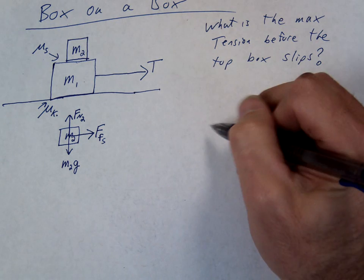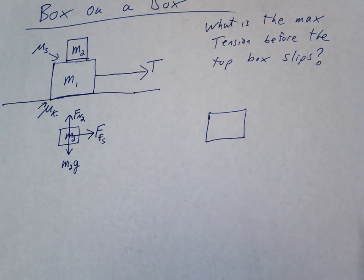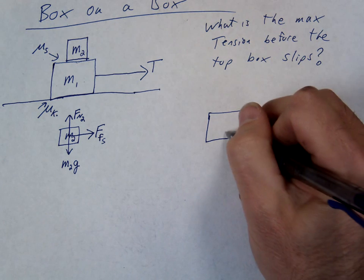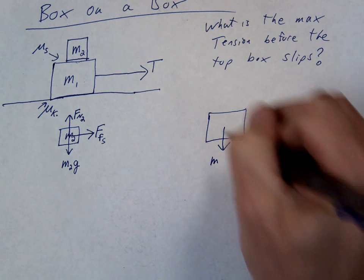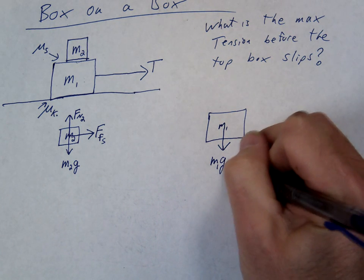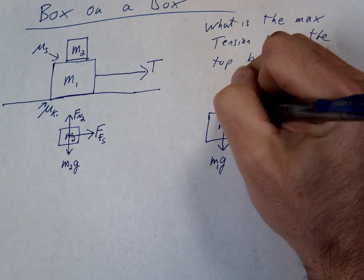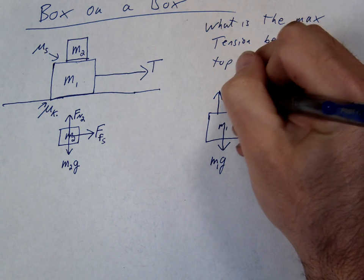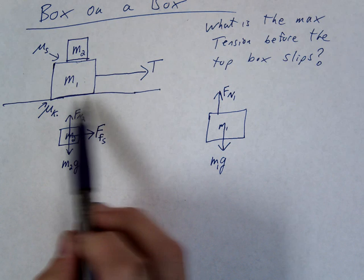Let's do the big block. Let's get some of the easy ones out of the way. Is there gravity on that big block? Yep. So we'll call that M1G. The ground is pushing up. So we'll call that FN1. So this is the ground pushing back up.